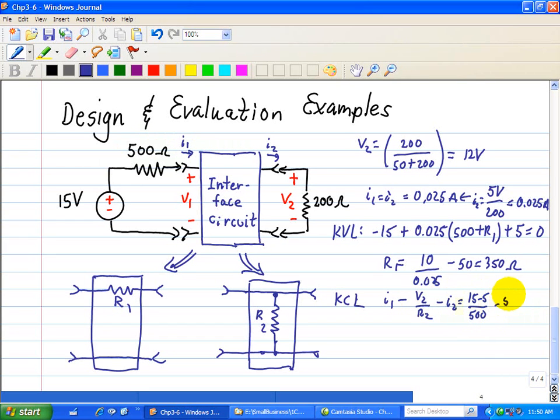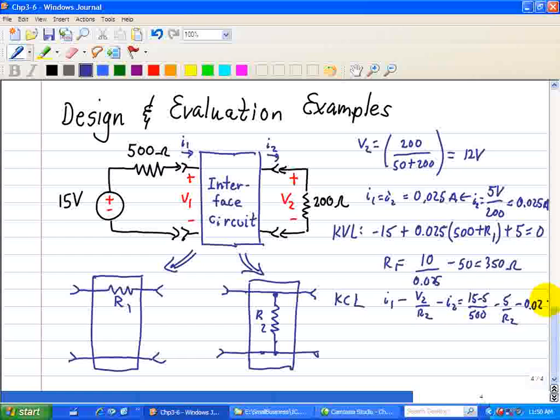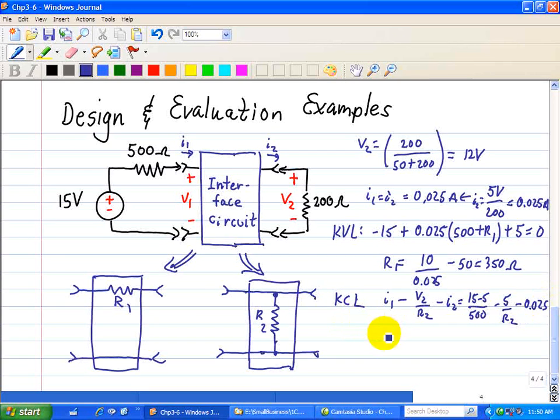V2 was given as 5 volts, R2 is what we're trying to find, and I2, since this is 5 volts divided by 200 that we saw earlier, is 0.025 amps.